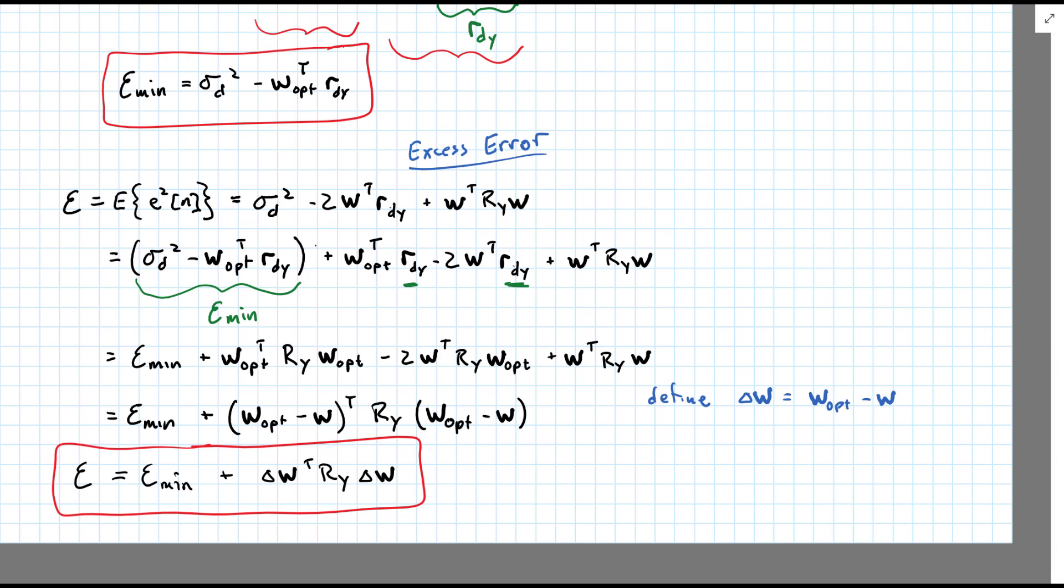And that will give us a final expression of E_min plus delta W transpose R_y delta W. Like so. Two things to note. Obviously, we're going to have a minimum error of E_min, so that will be our offset.